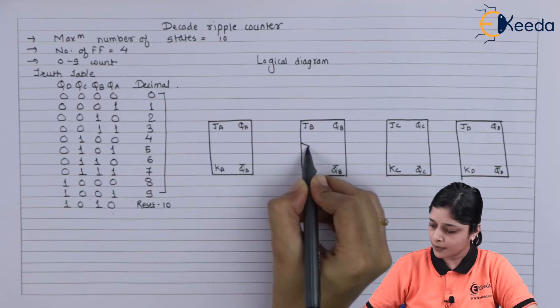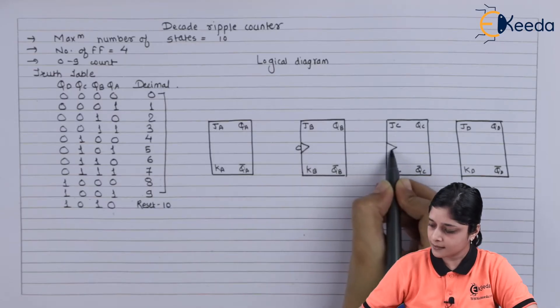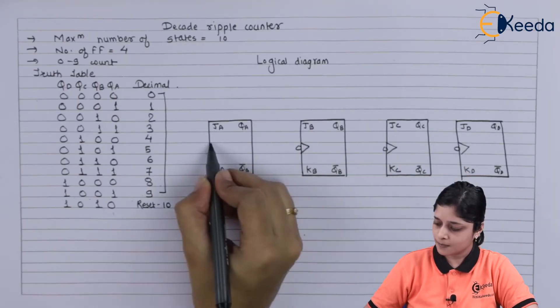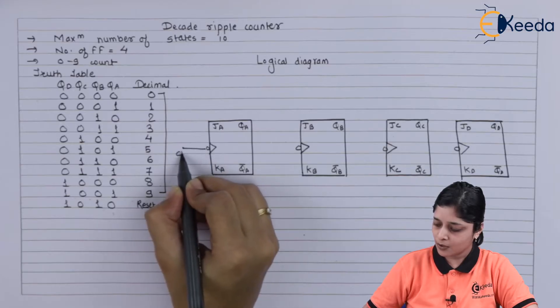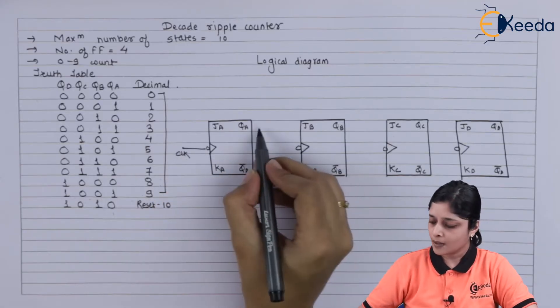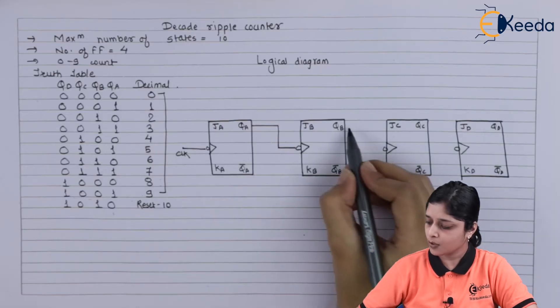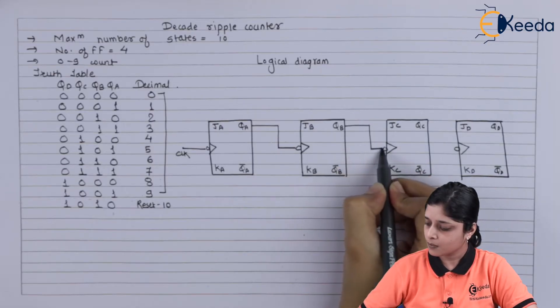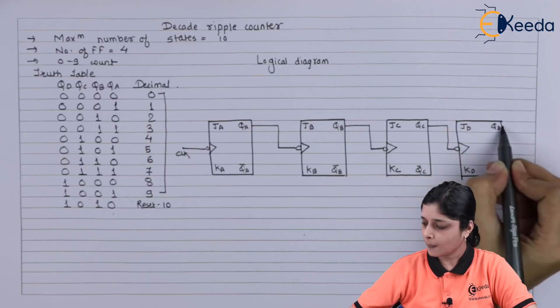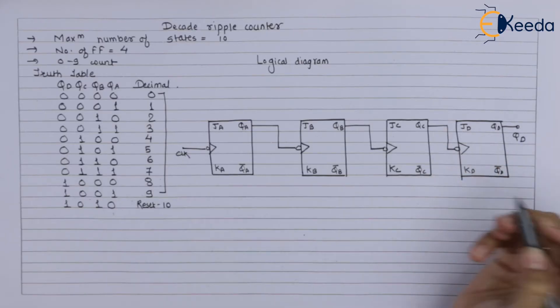Now we have to show the clock signals. This becomes your clock. Output of first flip flop we are going to connect to clock, and this becomes your output QD.